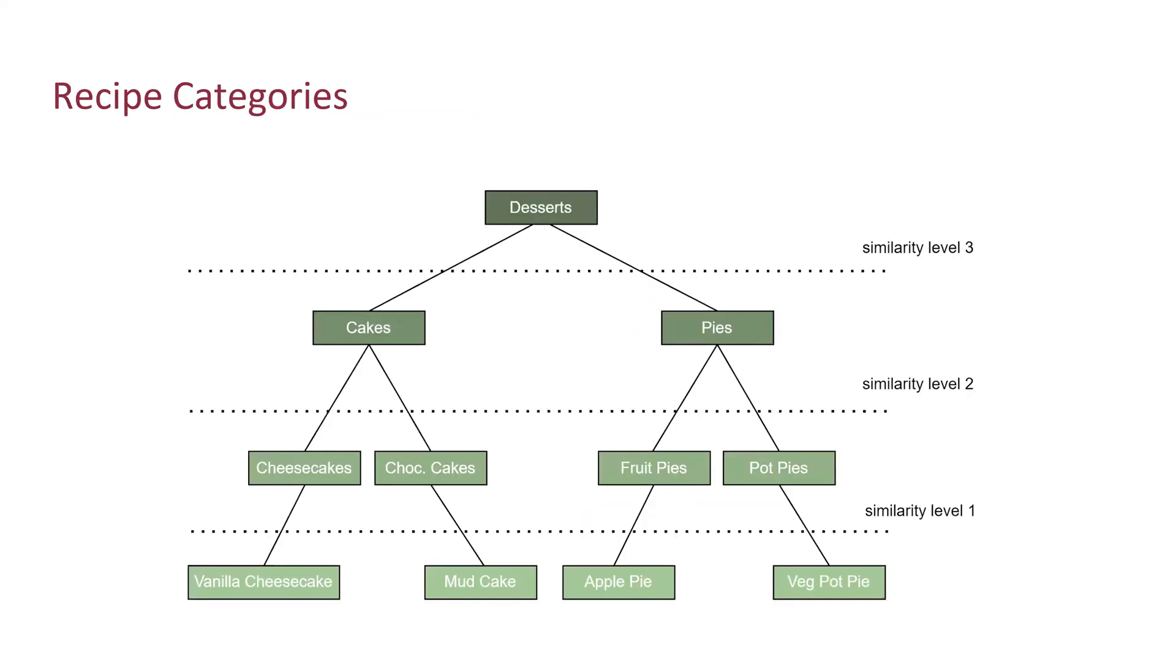Before I continue to other loss functions, I want to first explain the structure of our dataset a little bit. In our dataset, each recipe is matched with one of the recipe categories. The categories include a wide range of food types. There is an inherent hierarchical structure among the recipe categories. For example, many recipes can be placed under dessert. Then cakes, as dessert, can be further divided into cheesecakes, chocolate cakes, and so on.